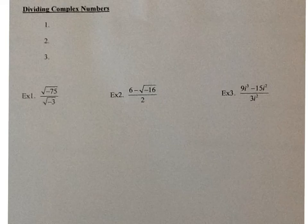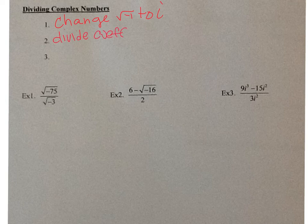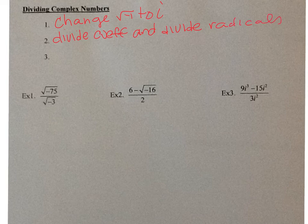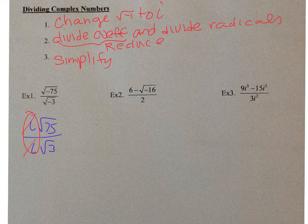Now let's look at dividing — almost the same process. Change square root of negative 1 to i, then divide coefficients and divide radicals, reducing where needed, and simplify. For example: square root of negative 75 divided by square root of negative 3 becomes i root 75 divided by i root 3. The i's cancel to 1, and root 75 divided by root 3 is root 25, which equals 5.